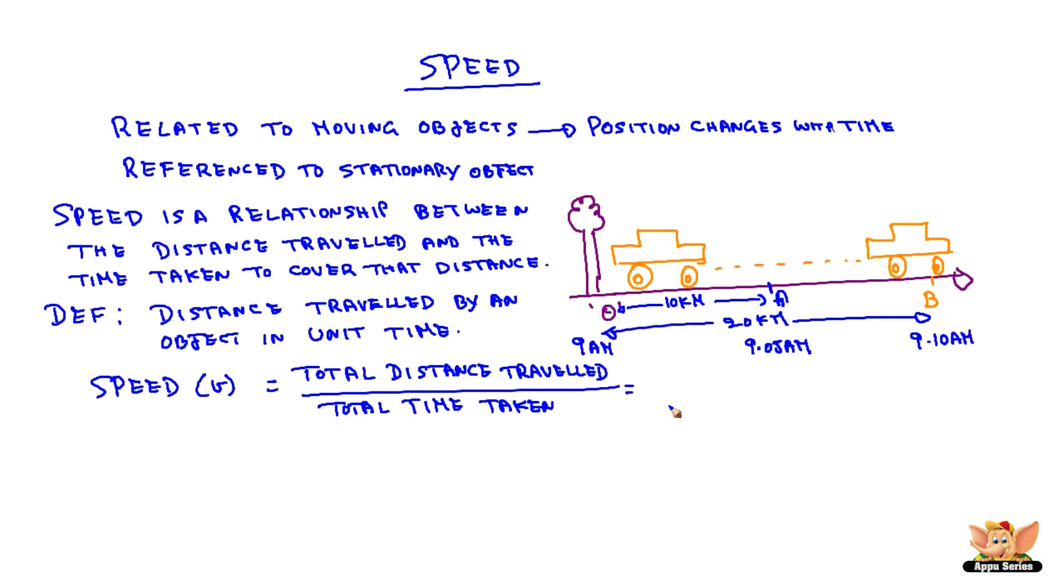For example, the total distance travelled by the car from O to B is 20 km in 10 minutes. So, this will be 20 km divided by 10 times 1/60 hours, which is 20 times 60 divided by 10, which becomes 120 km per hour.